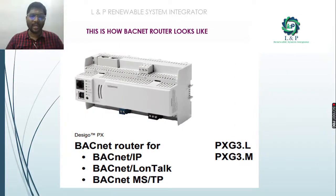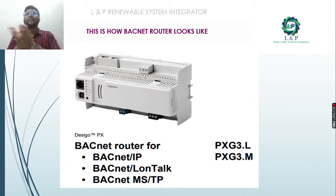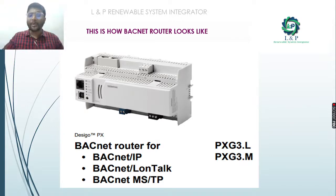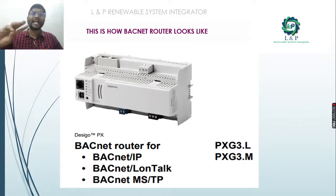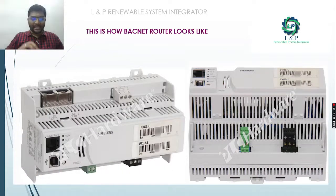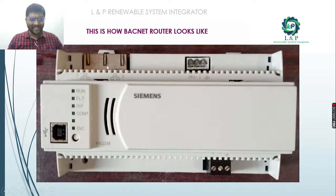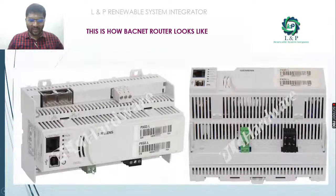This is how the routers look. We can classify BACnet routers into: BACnet IP, BACnet LAN network, and BACnet MSTP. We have two models available: PXG3L and PXG3.M. The PXG3L supports IP, LAN (LON talk), and MSTP — all three. The PXG3.M supports IP and MSTP. The PXG3L has power connections, Ethernet connections, MSTP, and LAN connections, while the PXG3.M has power, Ethernet, and MSTP connections.